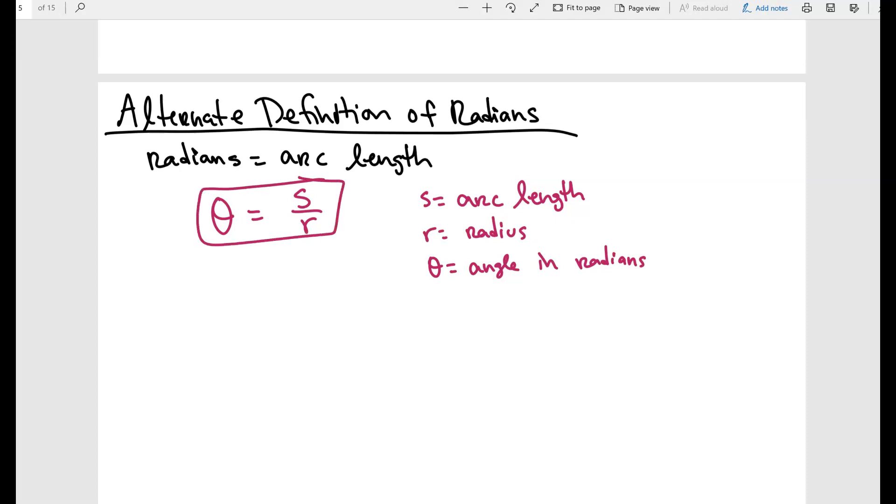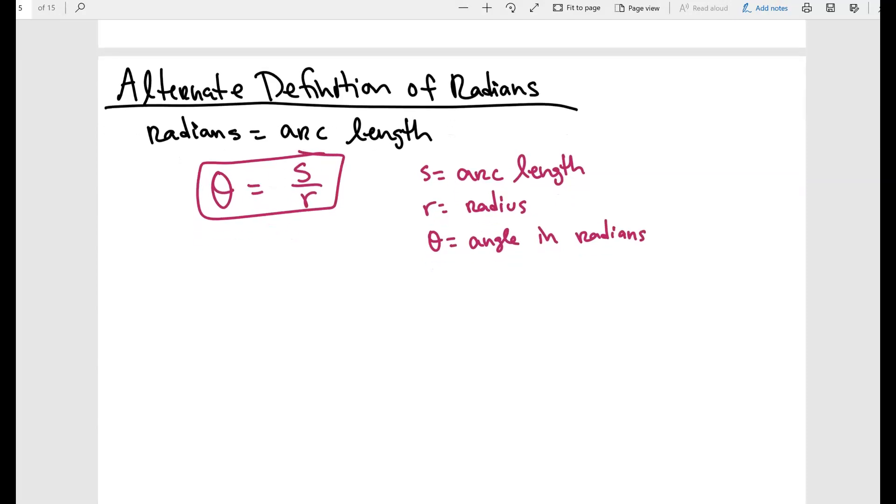Now you have this formula. Notice that I can also solve for S by multiplying by R. So we have S is equal to R theta. These formulas are exactly the same. Basically, if you want to find the angle, if you want to find theta, this is the formula that you want to use. If you want to find the arc length, then you want to use that second formula.